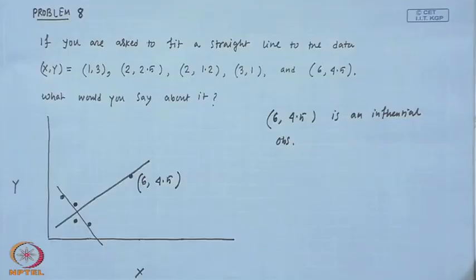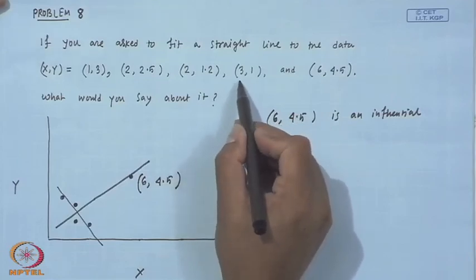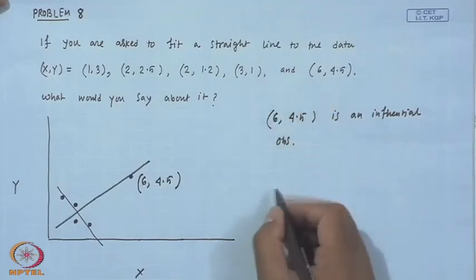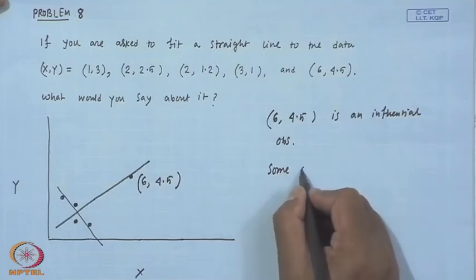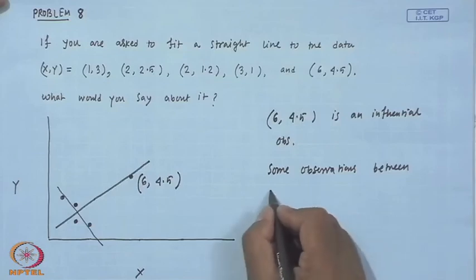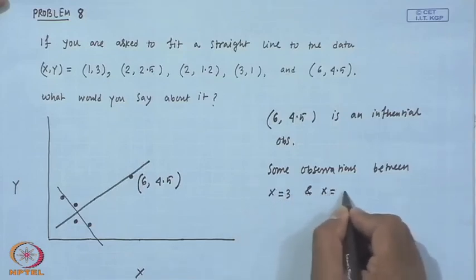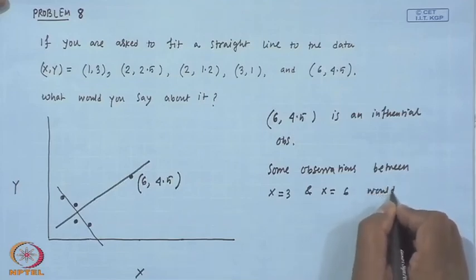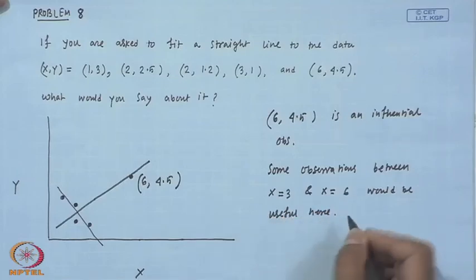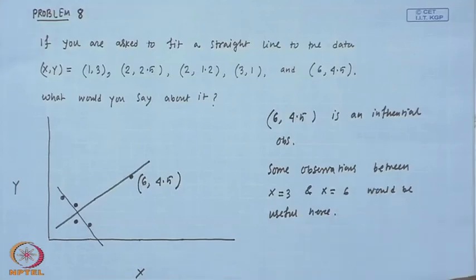The recommendation is: if there exist very few influential observations that you can identify, you can ignore them and fit a model for the remaining data. Also, here the data goes up to x = 3 and then jumps to x = 6, so some observations between x = 3 and x = 6 would be useful to fill the gap.